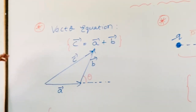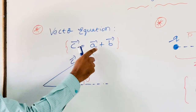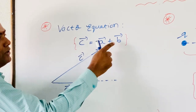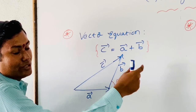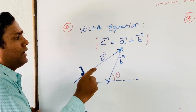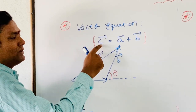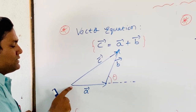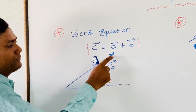First key idea. Consider the vector equation: C̄ = Ā + B̄. We are adding Ā with B̄. In the graphical representation, we add Ā's head to B̄'s tail. The resultant vector C̄ is drawn such that C̄'s tail is at the tail of Ā, and C̄'s head is at the head of B̄.